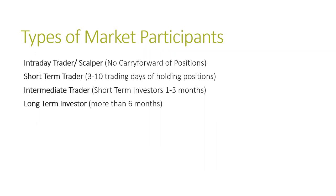Intermediate traders are short-term investors — typically bigger funds, mutual funds. Many funds hold positions for up to three months. Even Warren Buffett closes most of his positions in less than six months. Only a very few stocks like Coca-Cola get a long-term commitment. In India, investors like Ramesh Damani and the late Rakesh Jhunjhunwala, though primarily intermediate traders, hold some stocks for five, ten, or fifteen years. Anything more than six months to a year can be considered a long-term investor.